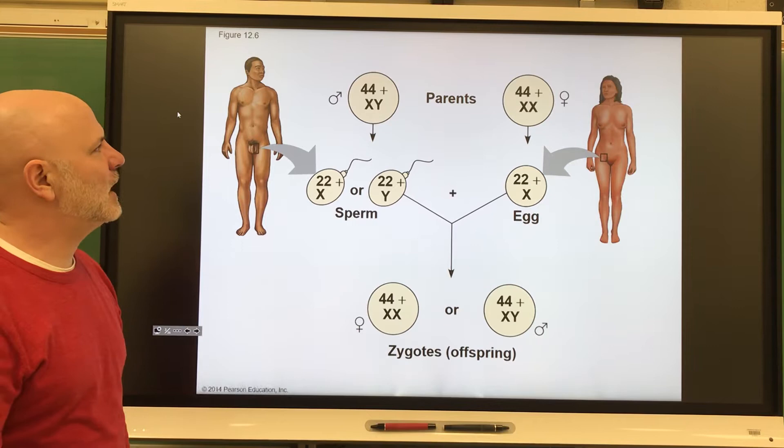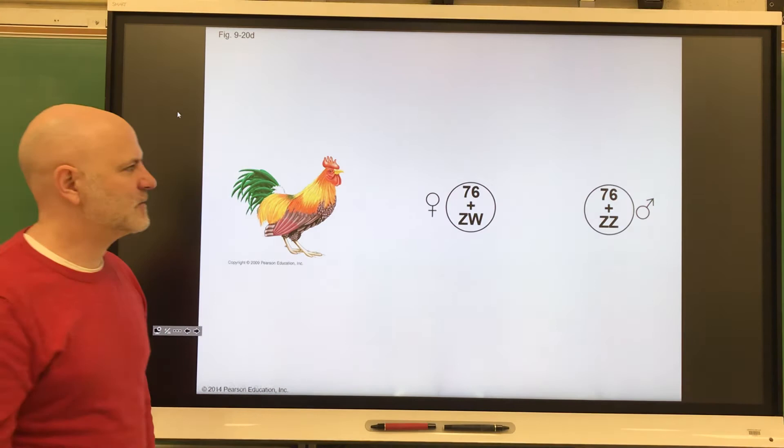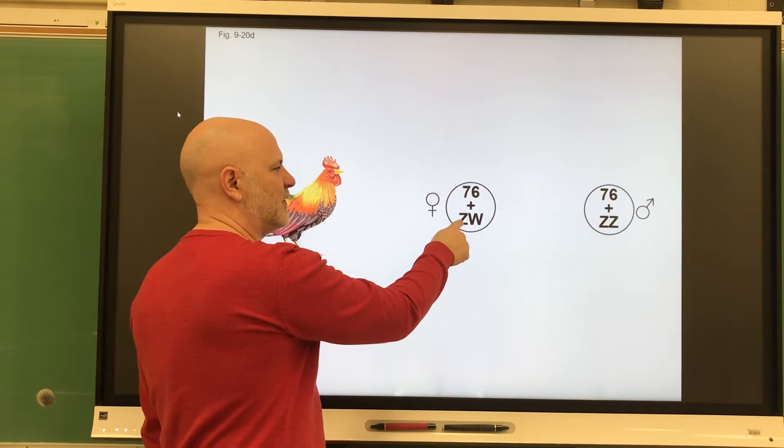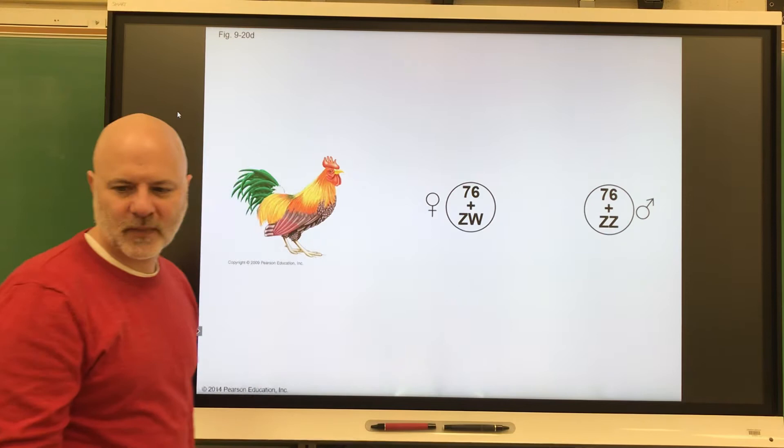As I mentioned, with birds, it's the female that determines the sex of the offspring. The male is only going to give off a Z chromosome. So if she gives off the Z chromosome, they're going to have a male. If she gives off the W, they're going to have a female.